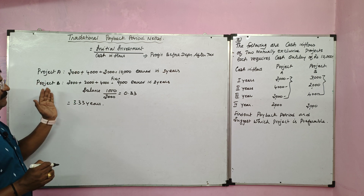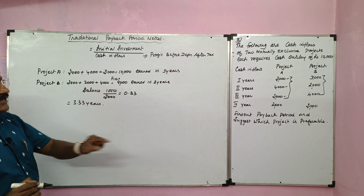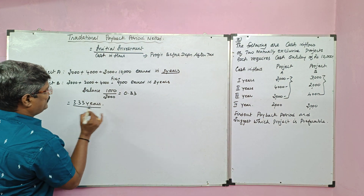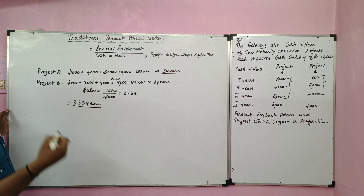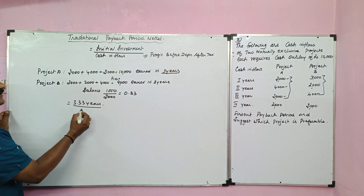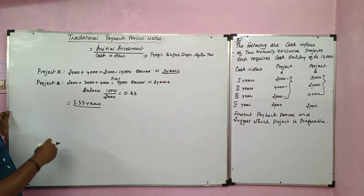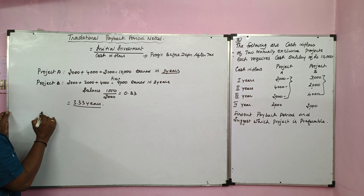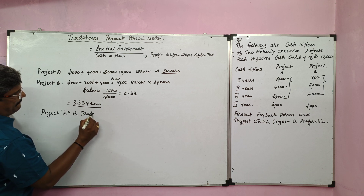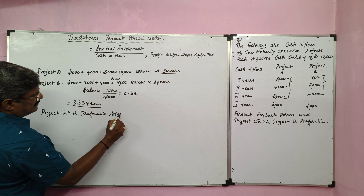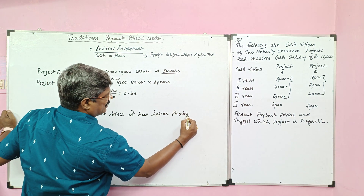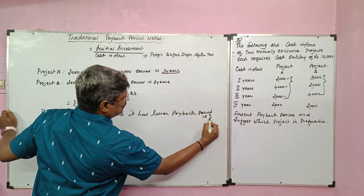Project A payback period is 3 years and project B is 3.33 years. Since project A has the lesser payback period of 3 years, project A is preferable.